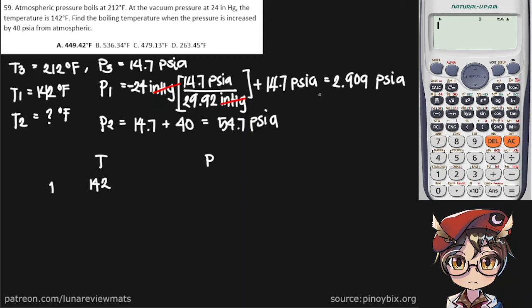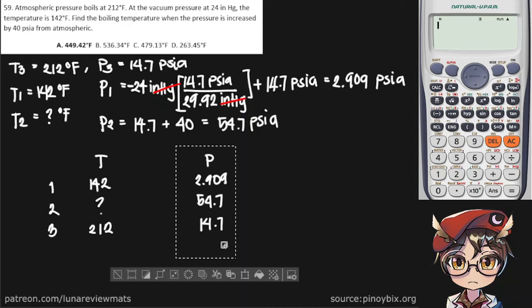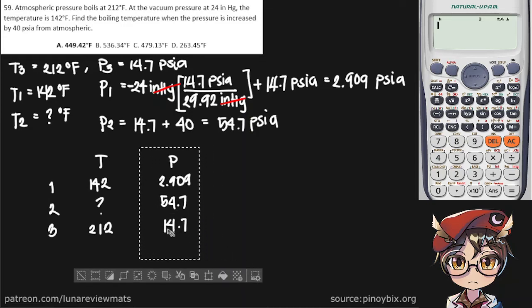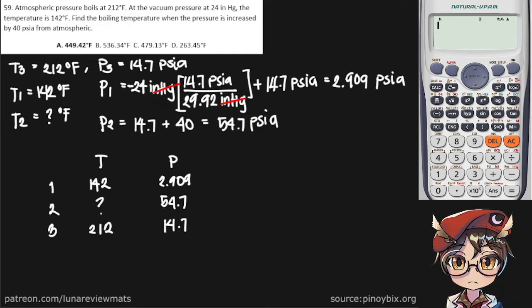T1 would be 142 degrees Fahrenheit, P1 would be 2.909 PSI A. T2 is what we're looking for, but P2 is given at 54.7 PSI A. T3 is 212 and P3 is atmospheric. And this is our table.